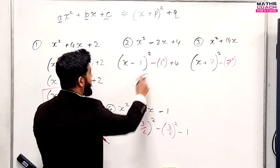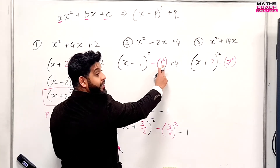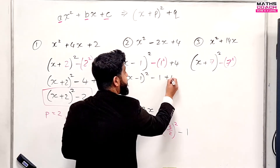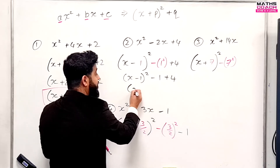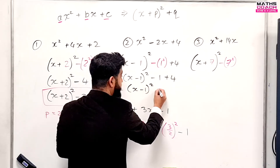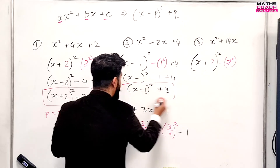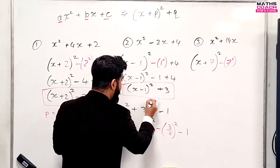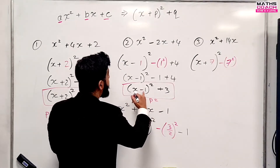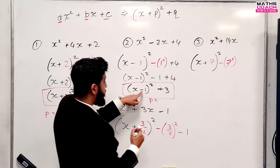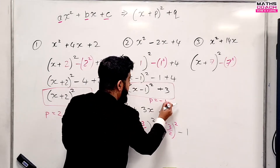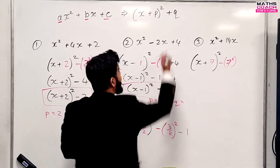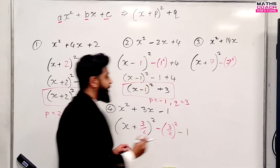For the second expression: one squared is one, so we have X minus one squared, then minus one plus four, which equals plus three. So the result is X minus one squared plus three. Your value for P here is minus one — because it's a minus in the bracket — and your value for Q is three, which is positive.